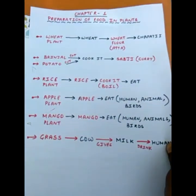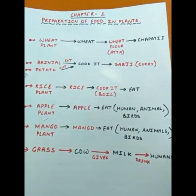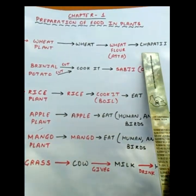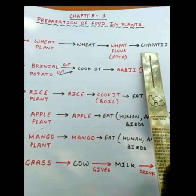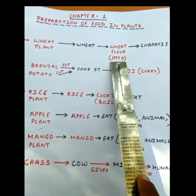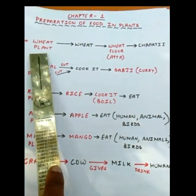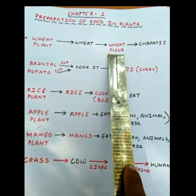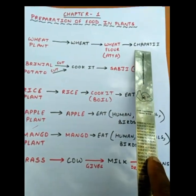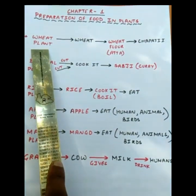Today we will study how this food is prepared and who prepares the food which we are eating. You told me that your mother made chapati. Have you ever seen how chapati is made? Chapati is made from wheat flour, which we call aata, and that aata is obtained by grinding wheat. The wheat comes from wheat plants, and then wheat flour is mixed with water to make chapati. So the chapati you are eating is obtained from wheat plants.